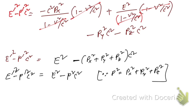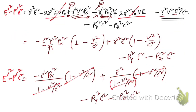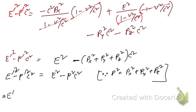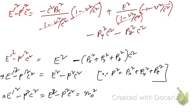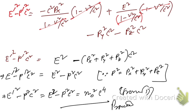It is therefore observed that E-prime squared minus p-prime squared c squared equals E squared minus p squared c squared, and from equation number one both equal m₀²c⁴. Hence it is proved that E² minus p²c² is invariant under Lorentz transformation. Thank you for watching — see you in the next video.